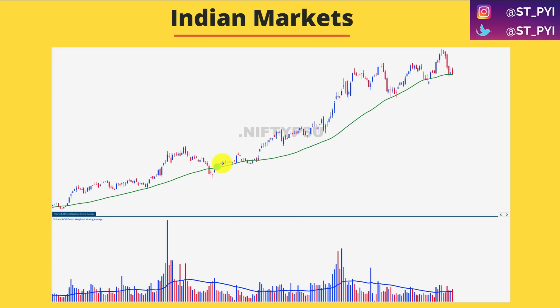Repeatedly, price comes and tests the 50 DMA. It tests the patience of people. People get shaken out, they exit their positions. And then a few quarters down the line, prices are again higher. The underlying base bullish case has to be assumed till the point these two pivots are not taken out. No one is asking you to be a blind bull — but when the market is pulling back, consider it as an opportunity unless and until pivots get violated.